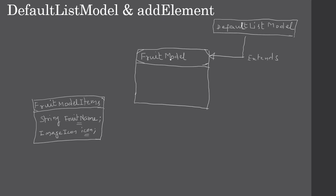Next we create one more class called FruitModel. This FruitModel extends from the Java API's DefaultListModel. The DefaultListModel contains a useful method called addElement. Using this DefaultListModel we can supply the data at runtime. With addElement, we will create an instance of FruitModelItems and give it to addElement. If we have seven list items, we will use FruitModel's addElement to add all seven items, and each item will hold a fruit name as well as an icon.